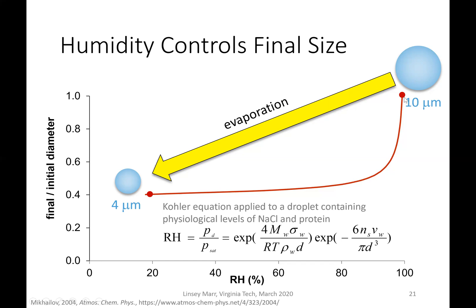Another thing to notice is that most of that evaporation and shrinkage happens even at high humidities. The equilibrium size drops off quickly — even by the time you're down to 80 to 90 percent humidity, your droplet is already half of its initial size, as you can see by that red dot.